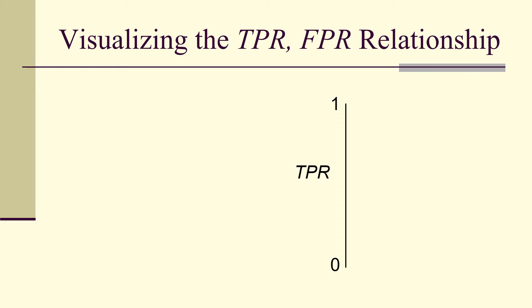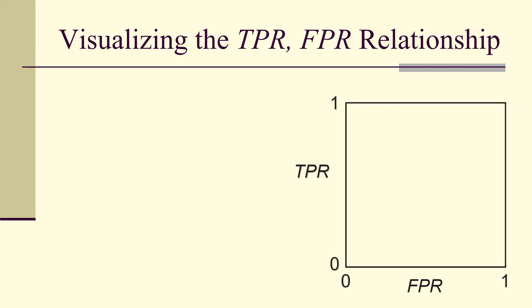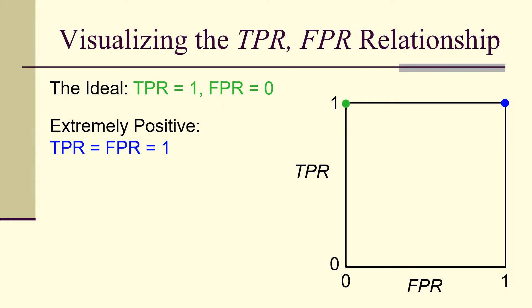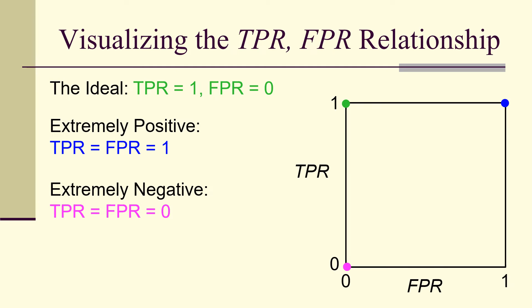We can visualize the relationship between the true positive rate and the false positive rate by placing the true positive rate on the vertical axis and the false positive rate on the horizontal axis, both ranging from 0 to 1. The ideal classifier has a true positive rate of 1 and a false positive rate of 0 — marked as the green dot at (0, 1). The all-positive classifier sits at (1, 1), the all-negative at the origin (0, 0), and the coin toss at (0.5, 0.5).